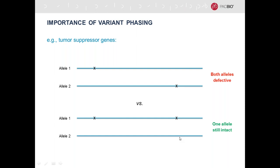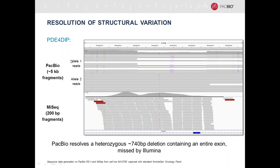In addition, it is possible with PacBio in this targeted probe-based scheme to identify larger structural variation beyond single nucleotide polymorphisms. Here's an example of PDE4D, another cancer gene, where it is easily recognized with PacBio that there is a deletion of about 740 base pairs in one allele. This deletion contains an entire exon, and all of this was missed with the corresponding MiSeq data because the reads are too short to resolve this structural variant.